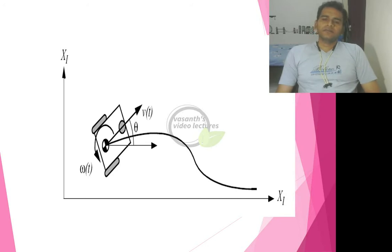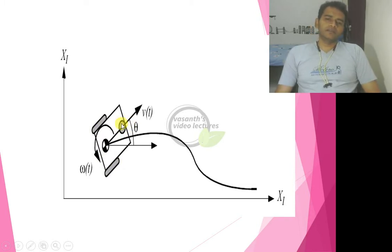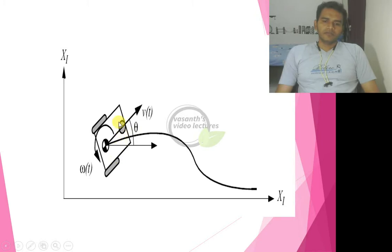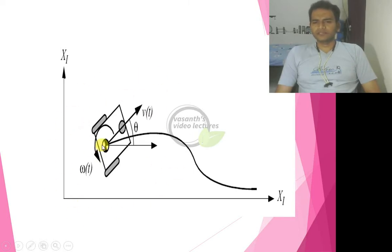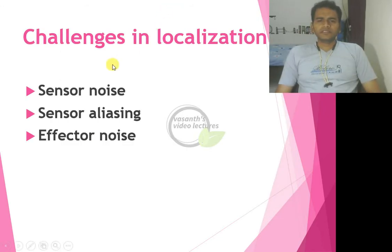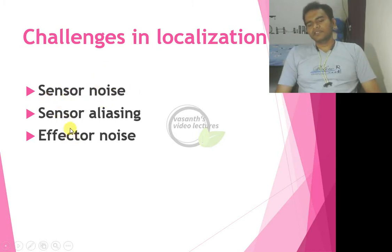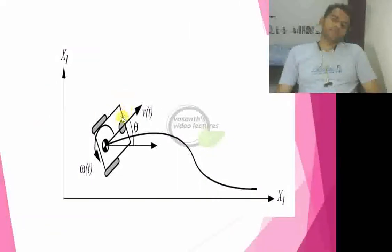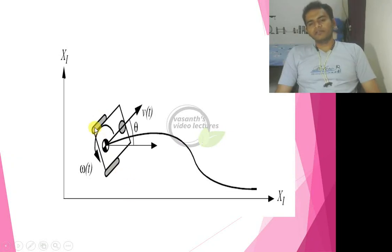This model has two wheels — a right wheel and a left wheel — and the front wheel is a steerable omnidirectional wheel that moves based on forces imparted on it. It has a heading velocity V(t) which varies with respect to time and an angular orientation. The key challenge is sensor noise, and this model has two encoders, one on each side of the wheels, giving two different data readings for one particular position.